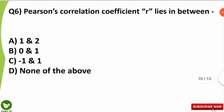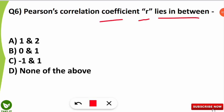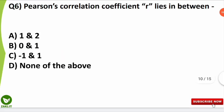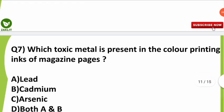The sixth question was from statistics basics. The question was: the Pearson correlation coefficient r value lies between which two numbers? Many of you gave the correct answer — option C. The Pearson correlation coefficient r lies between minus one and one.